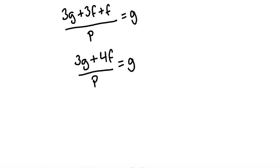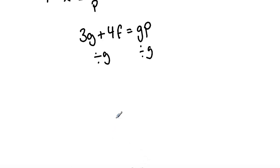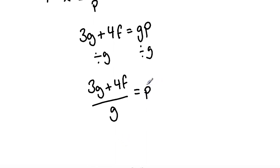I'm going to multiply both sides by p, which will cancel the p in the denominator. So we have 3g plus 4f equals gp. Now I'm going to divide both sides by g, giving us 3g plus 4f over g equals p. Rewriting so the subject is on the left hand side: p is equal to 3g plus 4f over g. And that's our final answer.